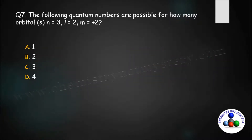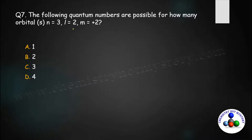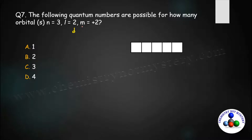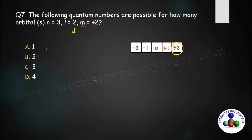Next question: for quantum numbers n=3, l=2, m=+2, how many orbitals are possible? Here l=2 means we are talking about the d subshell, which has 5 orbitals with m values ranging from minus 2 to plus 2 (i.e., −2, −1, 0, +1, +2). There is only one orbital with m=+2 in this set. So option A is the right answer.